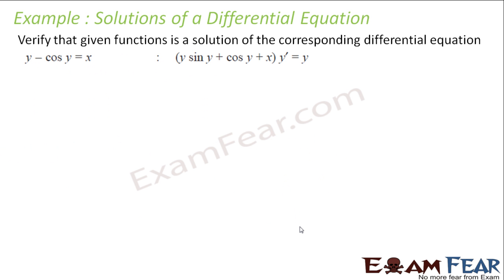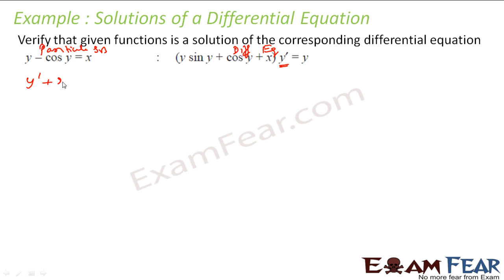Let us take one more example. We have to verify that y − cos y = x is a particular solution for this differential equation. Why I am taking more examples — so that you get comfortable with the differential equation concepts. Here also, if you see, there is a term y dash, so we have to find y dash. Let us differentiate the whole thing: y dash − (differentiating cos y gives −sin y × y dash) = 1, so y dash + sin y × y dash = 1.